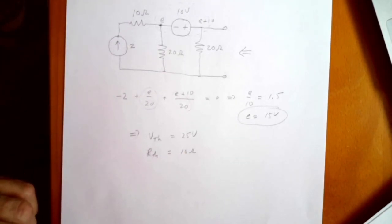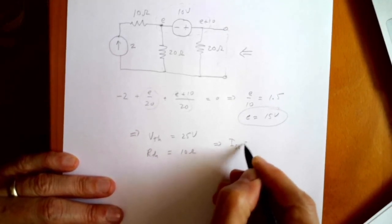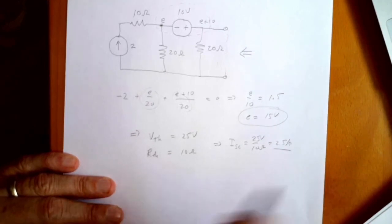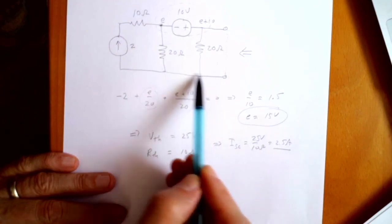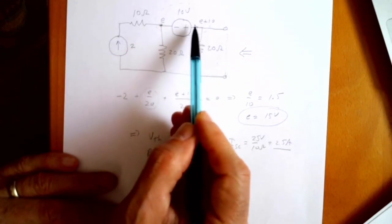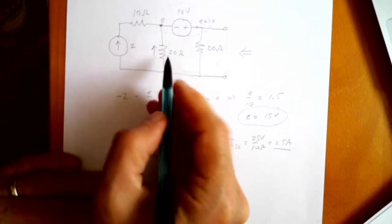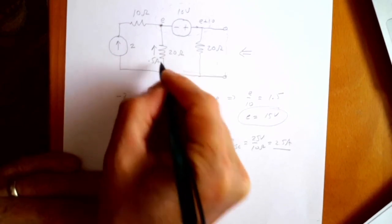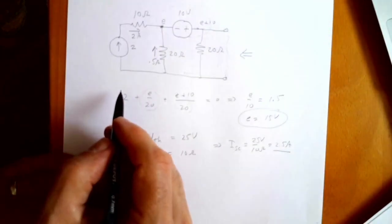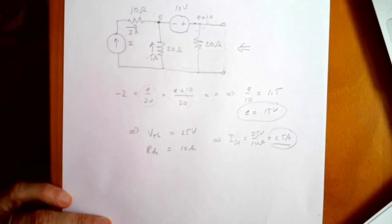Now, what that means is if I short these terminals, I should get a current V Thevenin over R Thevenin. So the short circuit current is going to be 25 volts divided by 10 ohms — that's going to be 2.5 amps. Let's check that. If I were to short this, that would mean this point would be ground and this point would be ground — this resistor would do nothing. So E would then become negative 10. If E is negative 10, there's going to be negative 10 divided by 20, which is 0.5 amps flowing down this branch. I still have my 2 amps flowing down this branch, so through this voltage source I'm going to get 2.5 amps. That's exactly what we decided. So the short circuit current is 2.5 amps, as predicted by the Thevenin equivalent.